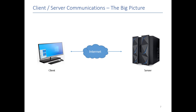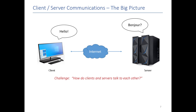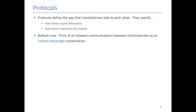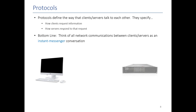The first challenge we have to figure out is how are these computers going to talk to each other? If we don't coordinate in advance, the client could send a message to the server that the server just doesn't understand — it would be like one speaking English and one speaking French. So the first thing we have to do is establish some sort of common language that allows clients and servers to talk to each other. That common language is what we refer to as a protocol. A protocol defines the ways that clients and servers get to talk to each other — how the client requests information and how the server responds.